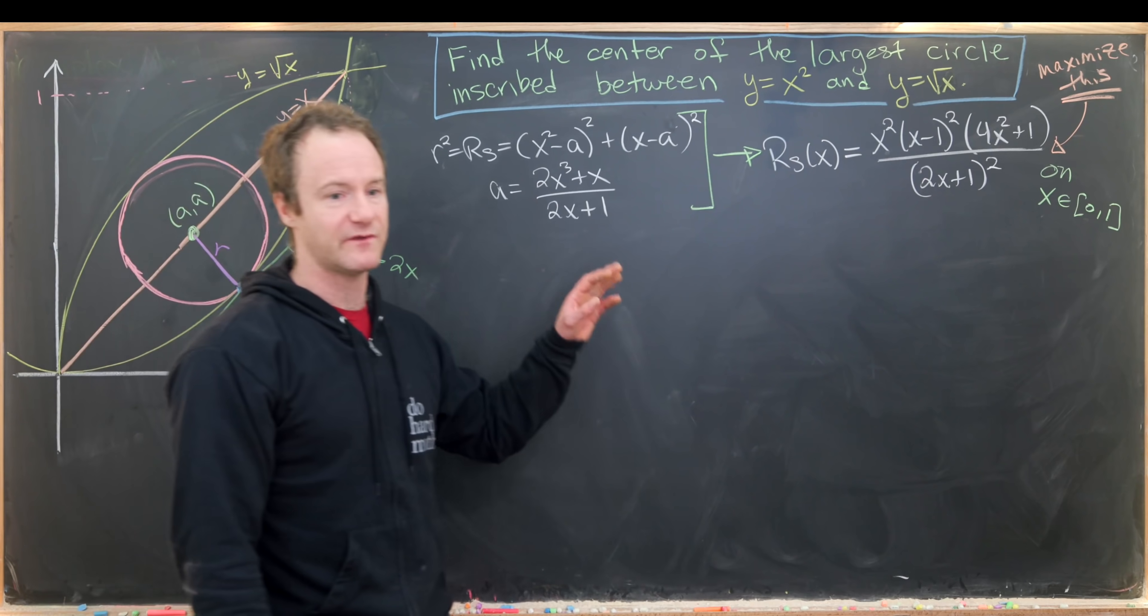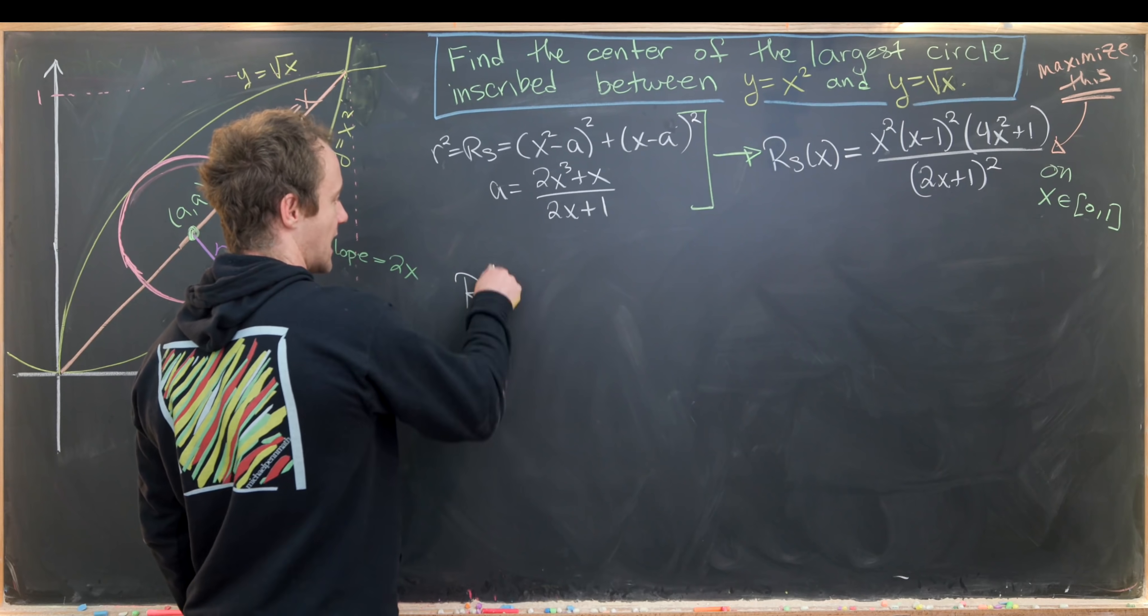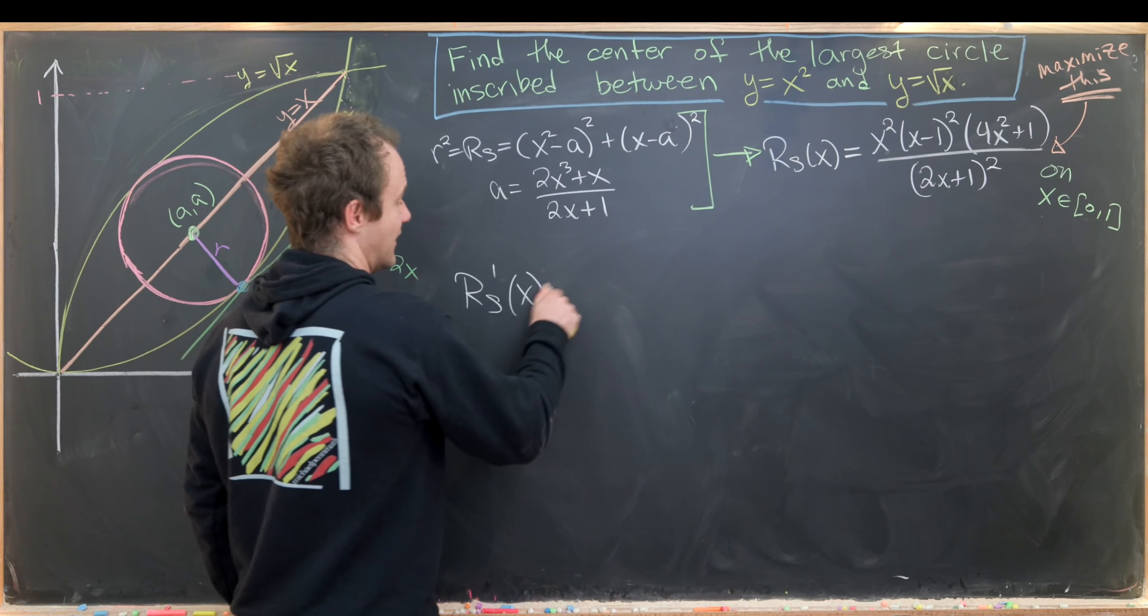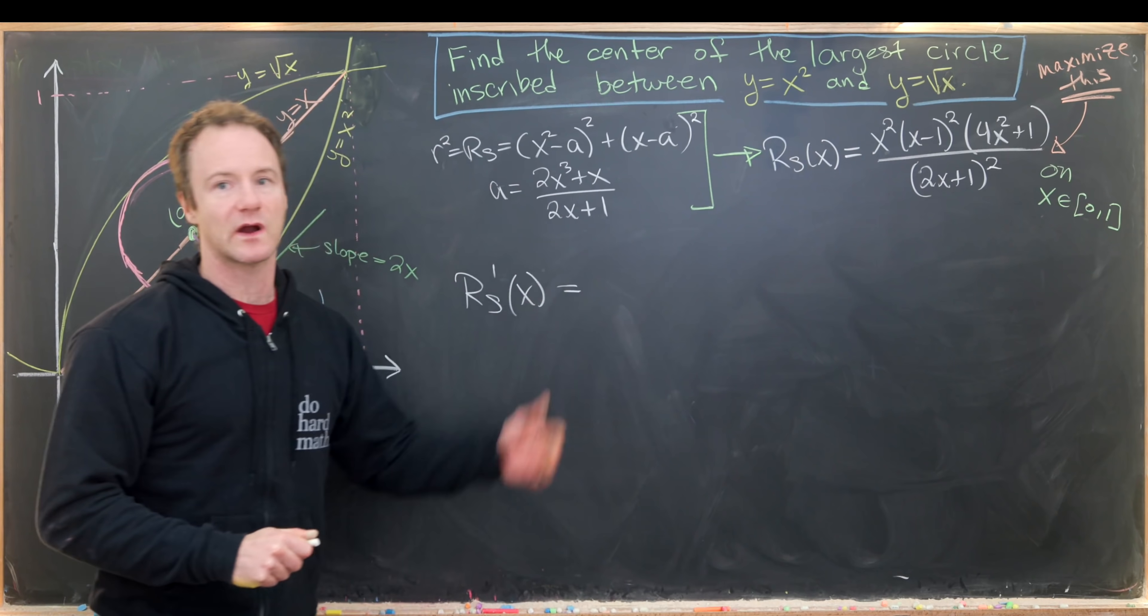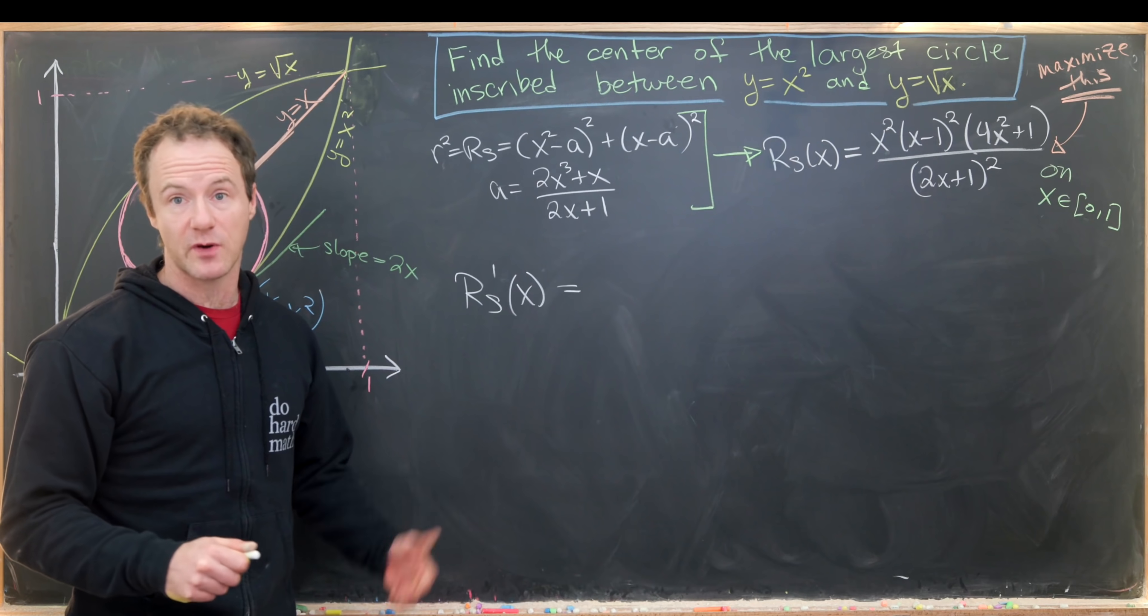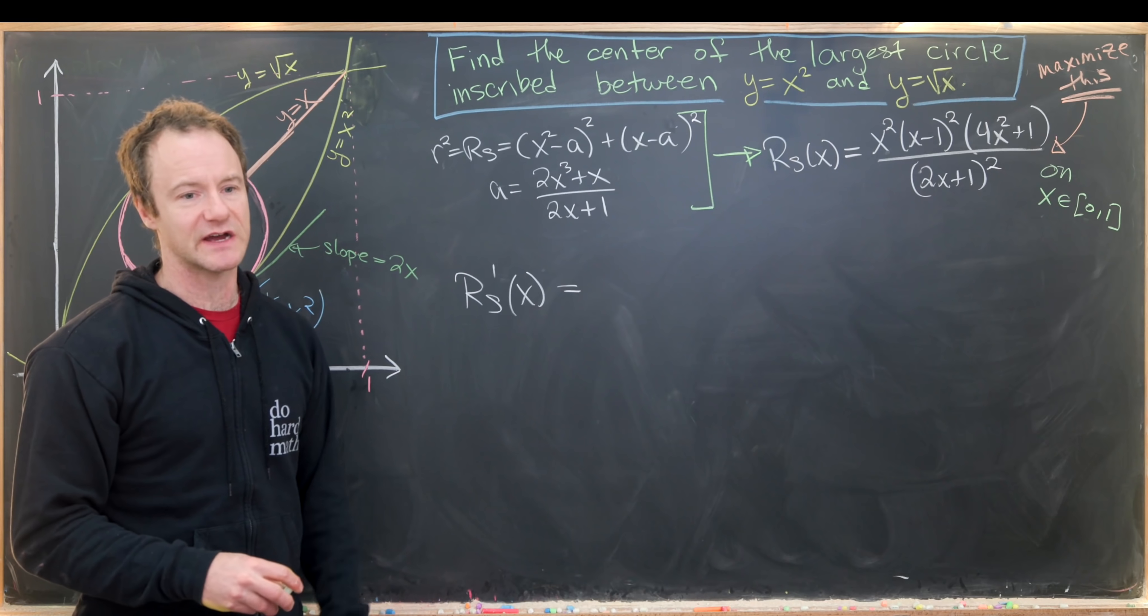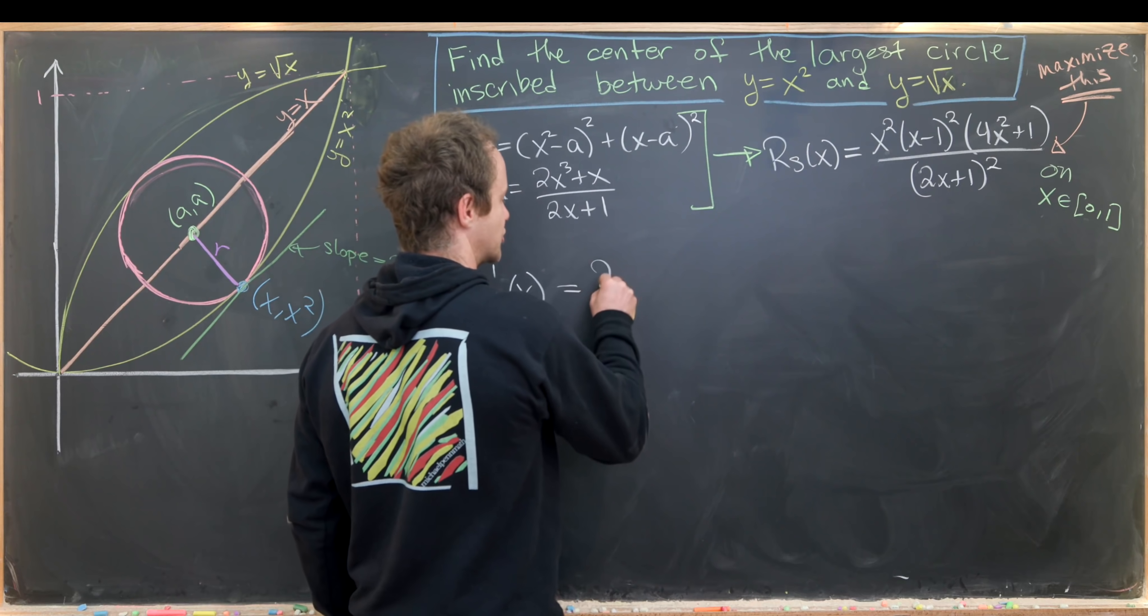How can we find this critical point? We can do that by taking the derivative. So rs prime of x—I'm not going to work out the details, this is a really heinous derivative problem involving the product rule and the quotient rule.